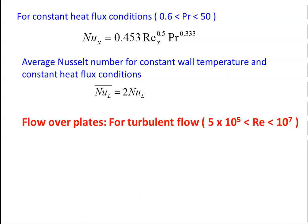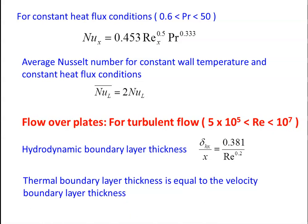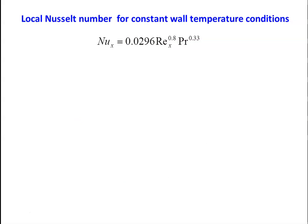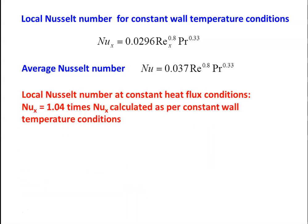For flow over a flat plate in turbulent flow (5×10⁵ < Re < 10⁷): hydrodynamic boundary layer thickness δ_Hx / x = 0.381 / Re^0.2, and the thermal boundary layer thickness equals the velocity boundary layer thickness. Local Nusselt number for constant wall temperature: Nu = 0.0296 × Re^0.8 × Pr^0.33. For constant heat flux condition, multiply the Nusselt number by 1.04.